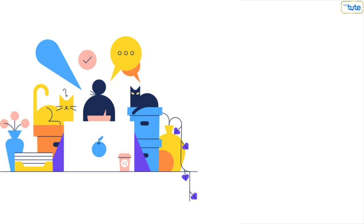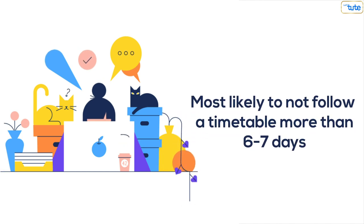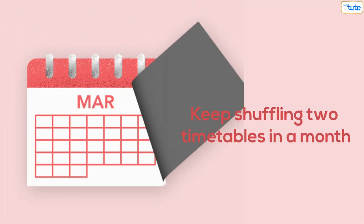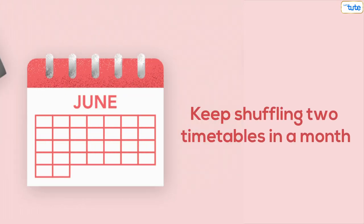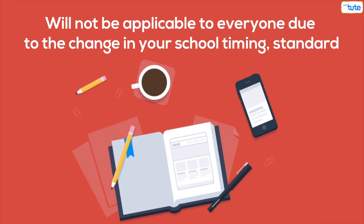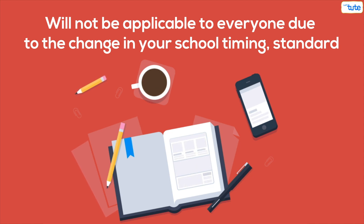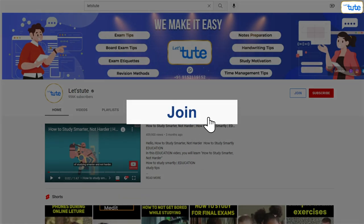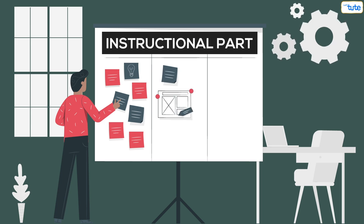Number five: keep changing your timetable, at least twice a month. You are most likely not going to follow a timetable for more than six to seven days. Keep shuffling two timetables in a month. Also, since this timetable may not apply to everyone due to different school timings and standards, click the join button to get your specific timetable.